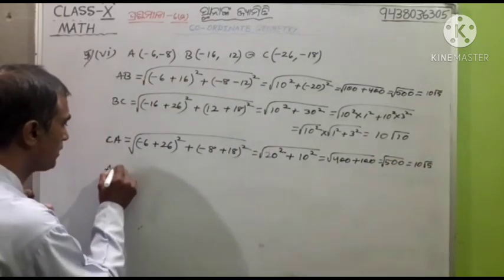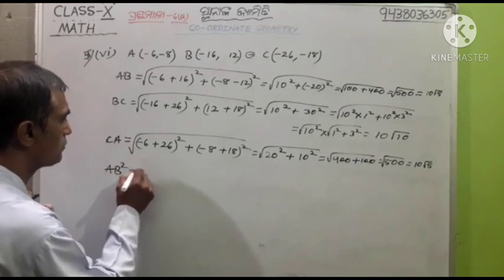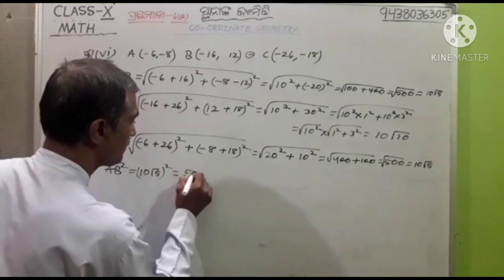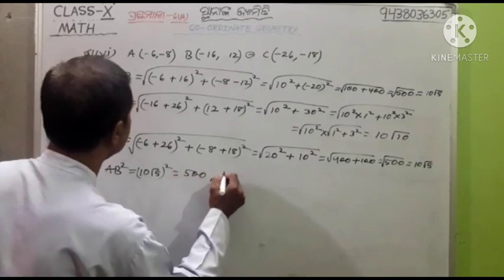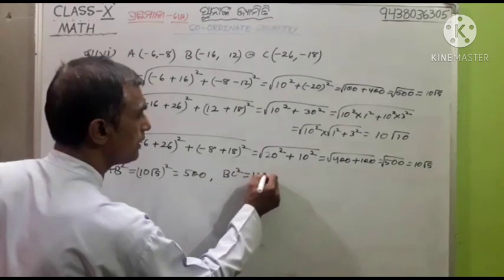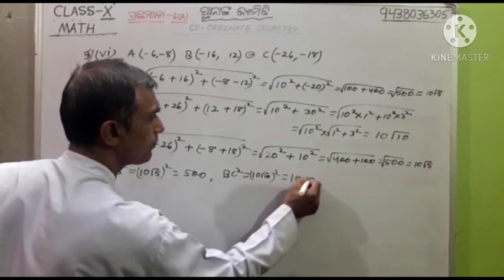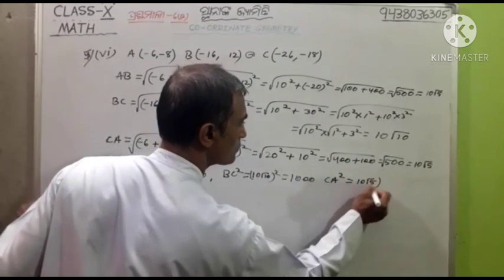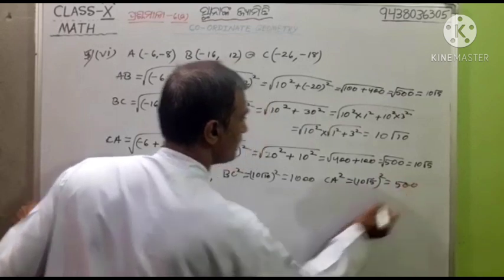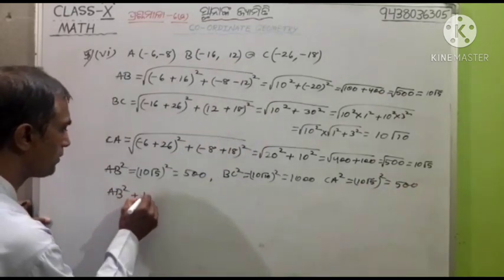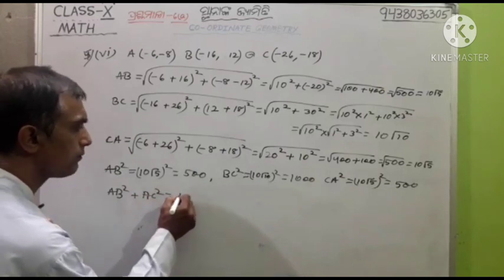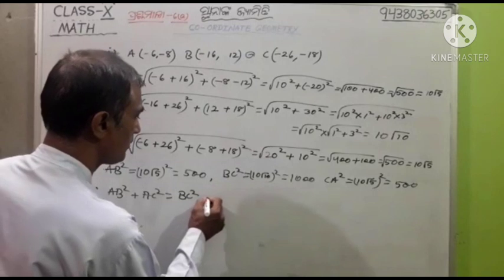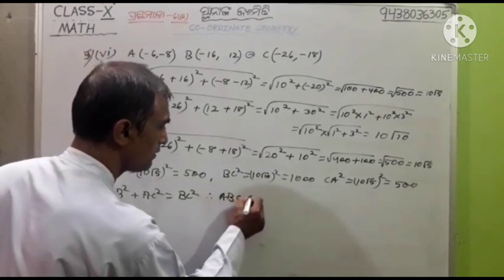Minus 8 square root is equal to 10 root 5. Root square is equal to 1000 plus 10 root. Root square is equal to 10 root 5. Root square is equal to 500. We plan to apply A, B: R square plus S square is equal to B, C: R square. So this is the second time we write about ABC.